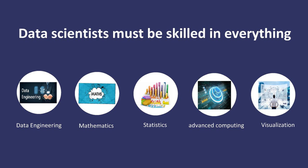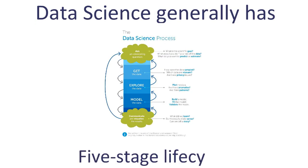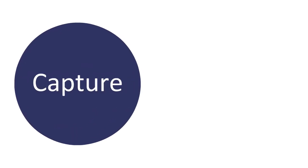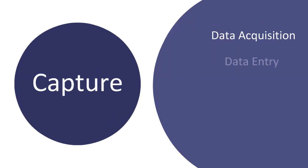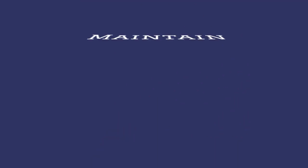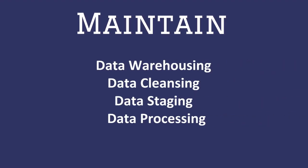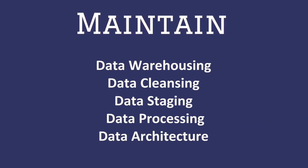Data science generally has a five-stage life cycle. The first stage is capture, where data acquisition, data entry, signal reception, and data extraction are performed. The second stage is maintain, where we do data warehousing, data cleansing, data staging, data processing, and data architecture.